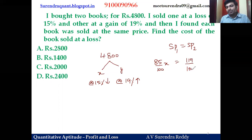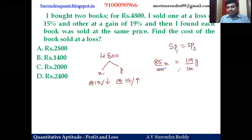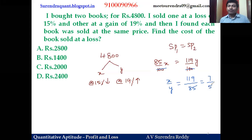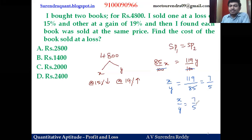Since the selling prices are equal, we equate: 85% of x = 119% of y. We find the ratio of the cost of the two books. The ratio of the first book to the second book is 7 to 5. Together, seven plus five gives twelve parts.